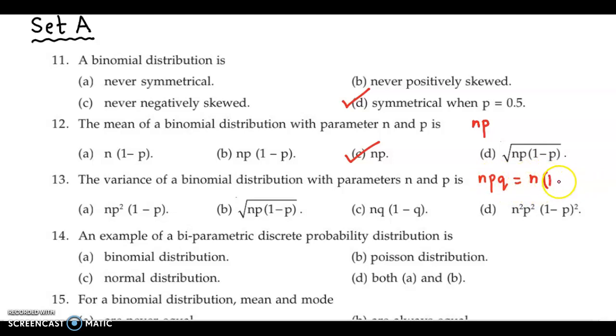Now instead of p, we could write 1 minus q into q. So this is also one way of expressing the variance. So the correct answer is option C, n into q into 1 minus q.